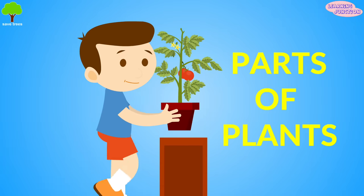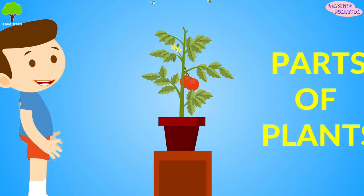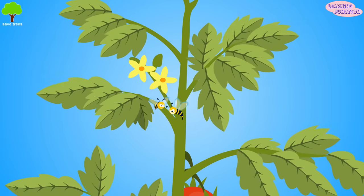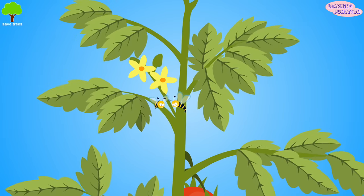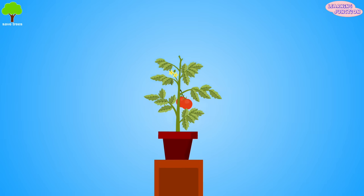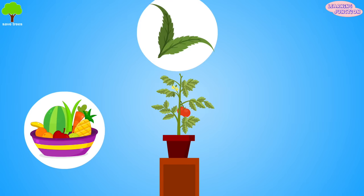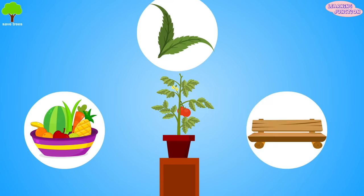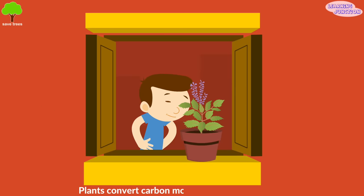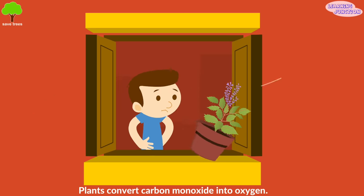Today, we will learn about the parts of a plant. A plant has many different parts, and each part has a set of works to do to keep the plant healthy. Plants provide us with food materials, medicines, wood, and they also convert carbon monoxide into life-giving oxygen. Amazing!